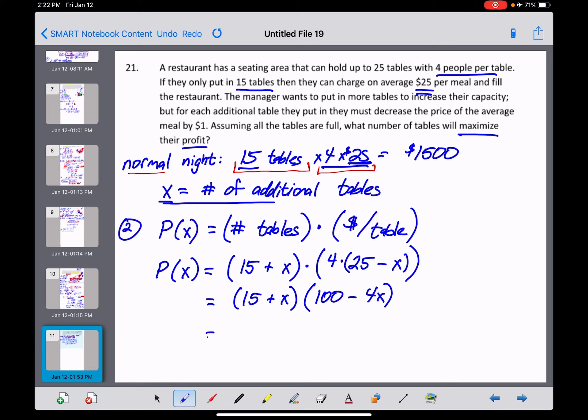Let's distribute that four now to get a 100 minus 4X. And I think this one wouldn't be too bad to foil out, which will make it easier to differentiate on the next step. So 15 times 100 is $1,500. Outer product is a minus 60X. Inner product is a plus 100X. That's going to be a plus 40X. And then your last product, X times a minus 4X, is going to be a minus 4X squared.